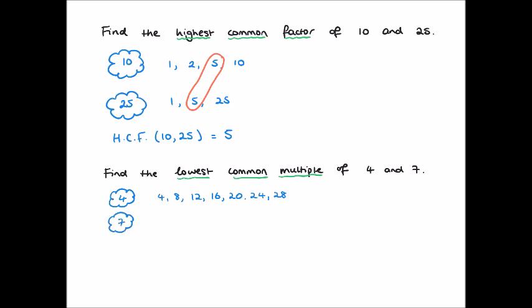We repeat this process for 7. We have 7, 14, 21, and we know we can stop at 28 since by definition the 4th number will be 4 times 7 — it has to be a multiple of 4. The smallest number in both lists is 28. And so the lowest common multiple of 4 and 7, abbreviated to LCM, is 28. It's worth noting that whilst 4 times 7 happened to be the LCM here, that won't always be the case. The product of the two numbers will always be a multiple, but not necessarily the smallest multiple common to both.